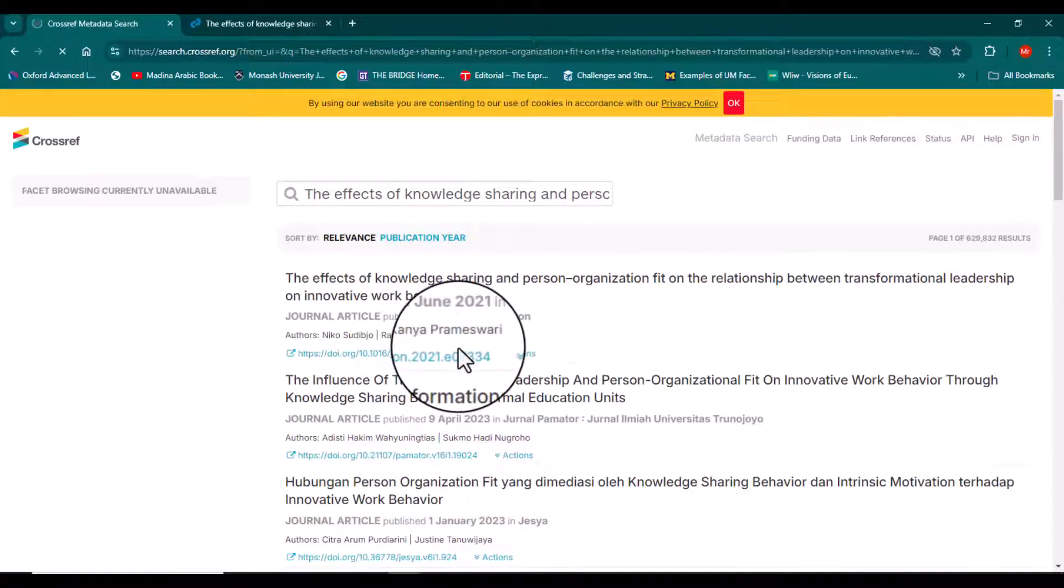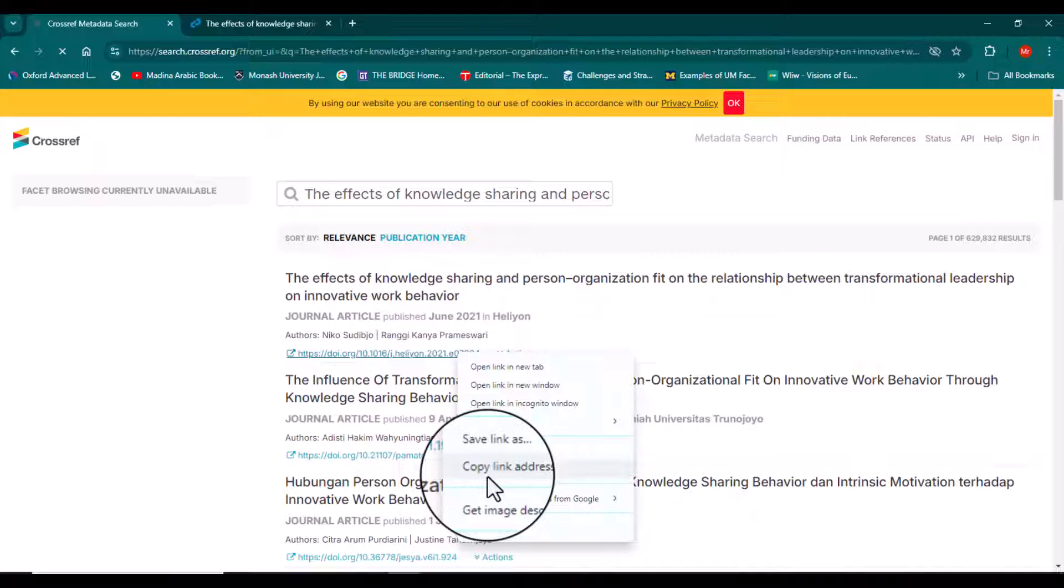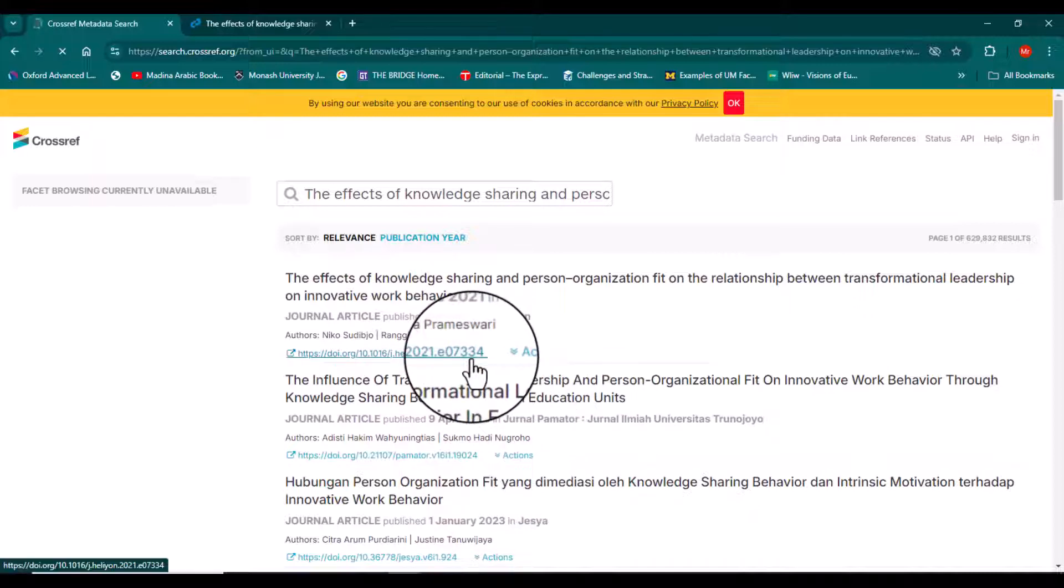From here we can simply copy and paste the DOI number in our document. The fourth strategy: we can contact the publisher or the author if we are still unable to locate DOI number using this website or the previous strategies.